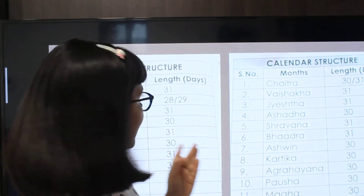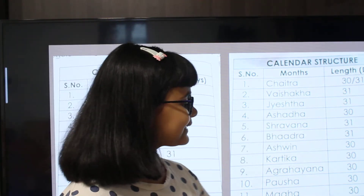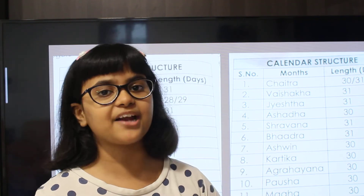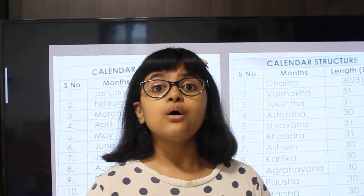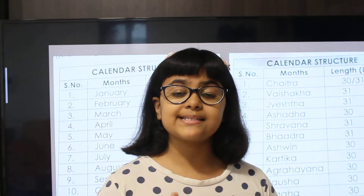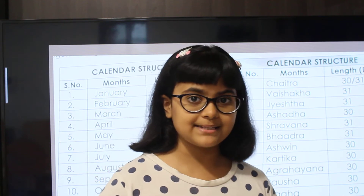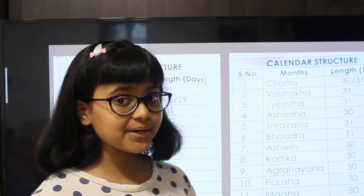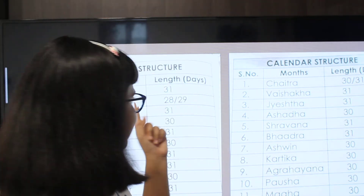Now let's look at the Saka calendar. The Saka calendar is known as the Indian National Calendar. In ancient times, most people of the Hindu religion mostly used the Saka calendar. In the Saka calendar, there are also 12 months — as in both calendars there are 12 months, but with very different names.